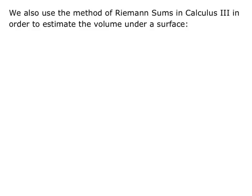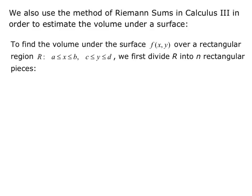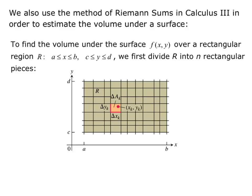To find the volume under the surface f(x,y) over a rectangular region R, from x going from a to b and y going from c to d, we first divide R into n rectangular pieces. We have this overall rectangle created by x going from a to b and y going from c to d. We divide it into these sub-rectangles, and for the width of each sub-rectangle, we'll call it Δx_k, and the height of each sub-rectangle we'll call Δy_k. So then the area Δa_k of each rectangle is going to equal Δx_k times Δy_k.